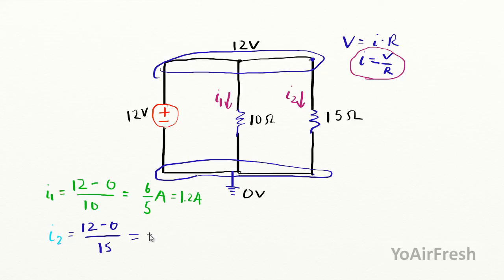That is 0.8 amps. So now we've solved for I sub 1 and I sub 2.